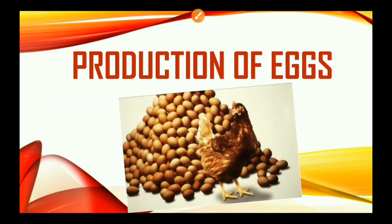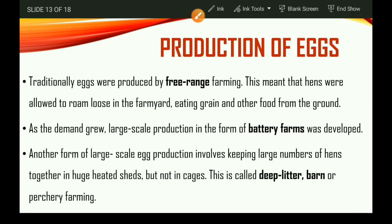Now let's look at the production of eggs. Traditionally, eggs were produced by free-range farming. This meant that hens were allowed to roam loose in the farmyard, eating grains and other food from the ground. So in free-range farming, they weren't in any cage — they were allowed to roam on the farm and consume whatever food was on the ground.